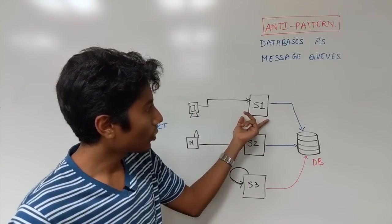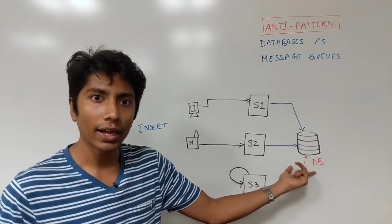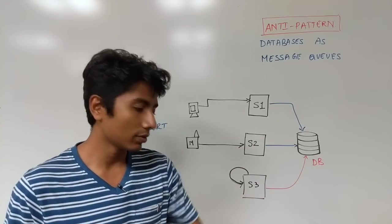So if you take S1, it's probably going to have a polling interval of 10 seconds. Every 10 seconds, it asks the database, is there any new message for me? If so, then I'll just read it.